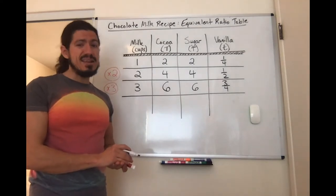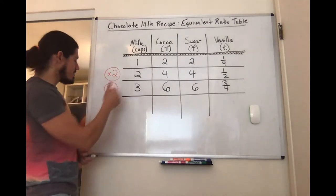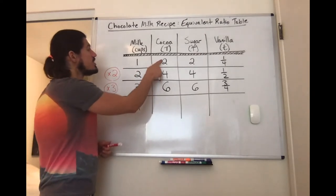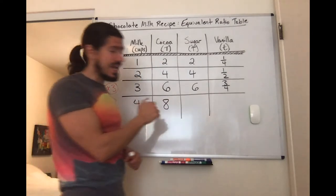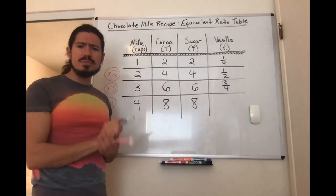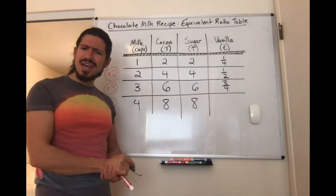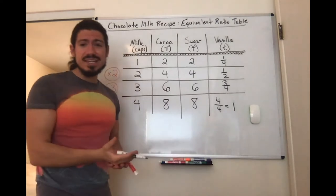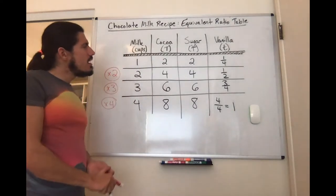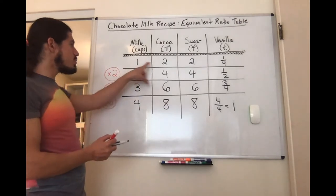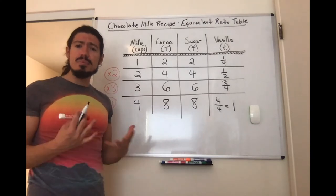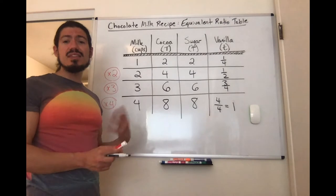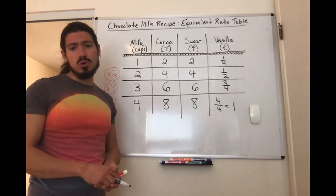I still need to work out for four people. I'm going to take the original recipe and multiply it by four. One times four is four; two times four is eight; two times four again is eight; and one fourth times four — if I have four fourths, that's the same as one. So I could just use one teaspoon of vanilla. Here I've made equivalent ratios to the original ratio. We call them equivalent ratios because they express the same relationship between the quantities.